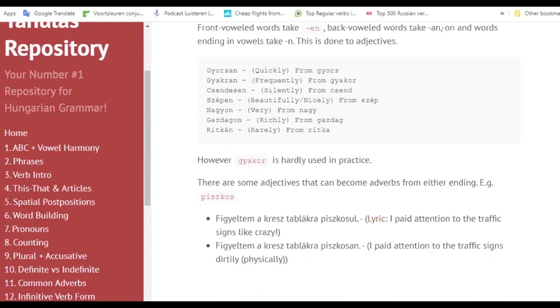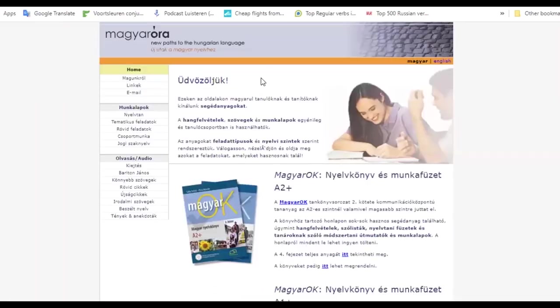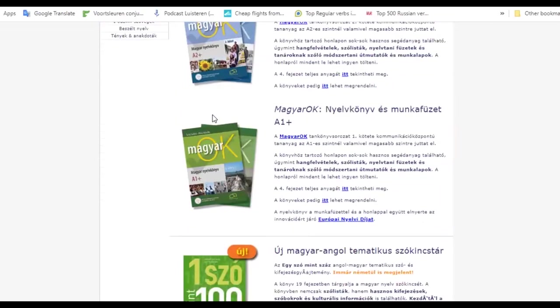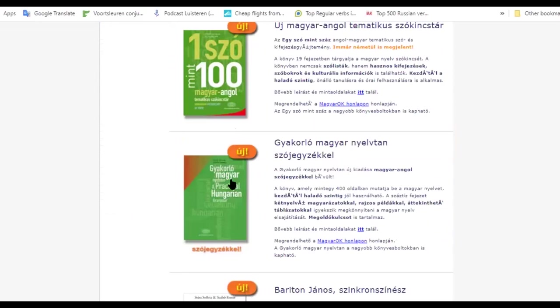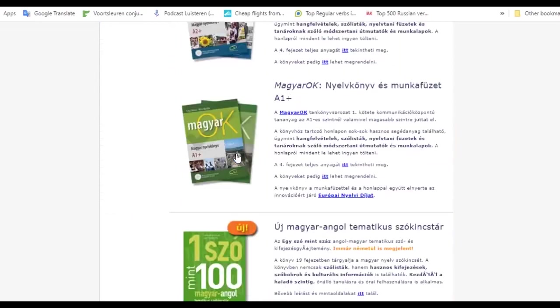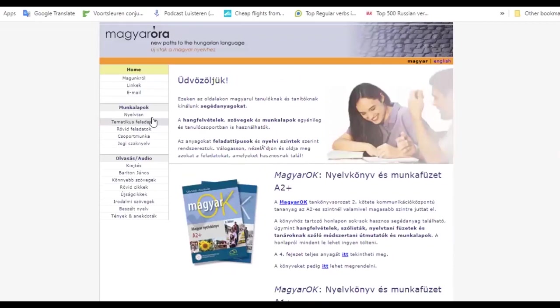Now the last website which in my personal opinion I think is the best. Here you also have resources, other books. Here you also see Practical Hungarian Grammar, the book that I mentioned before. But what's even better is that you have these sections: grammar, different topics, short exercises, pronunciation exercises, you have even literature simplified texts and so on.